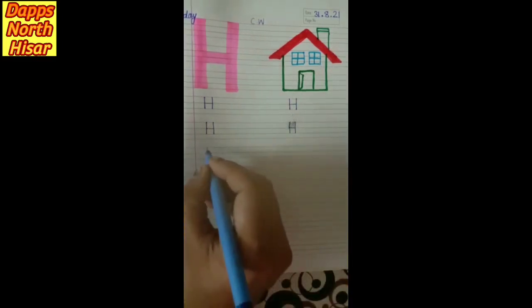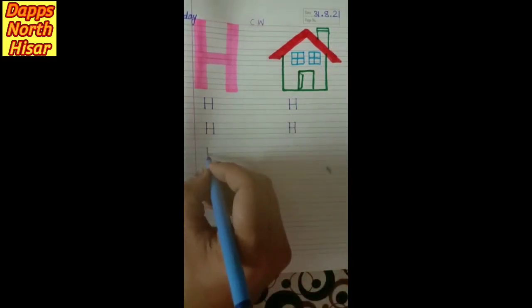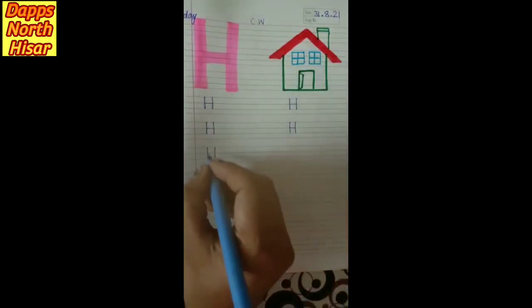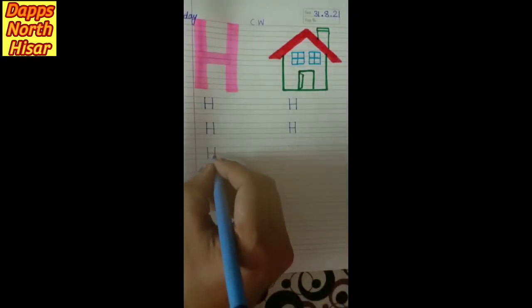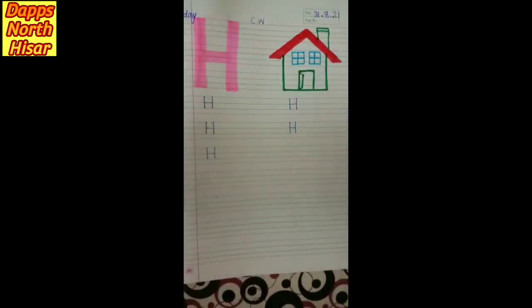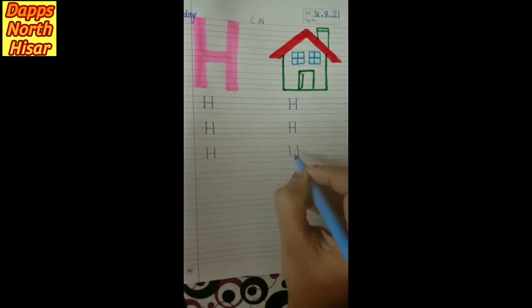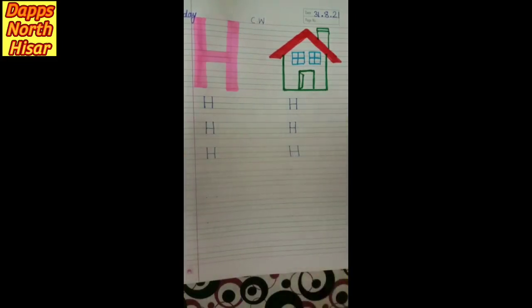Again — standing line, second standing line and slipping line. Like this, we are going to complete this all. Aise karke aapne complete karna hai. This is letter H.